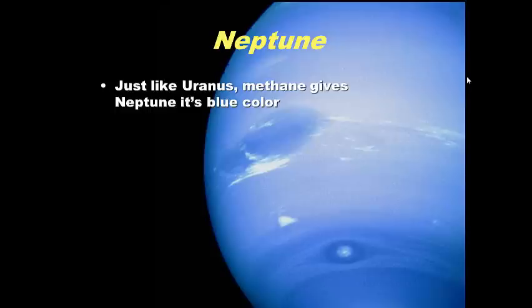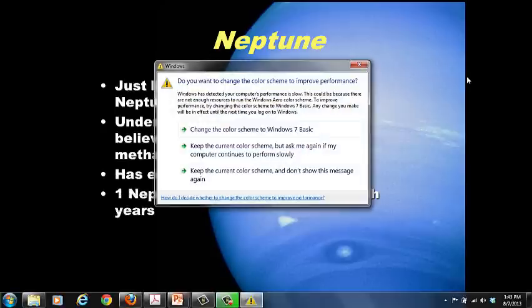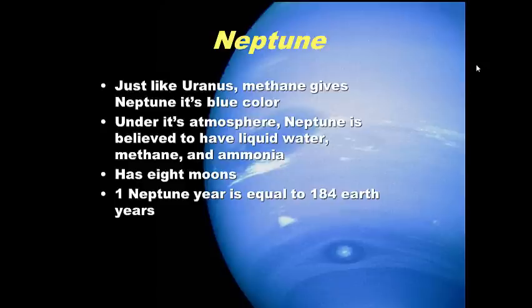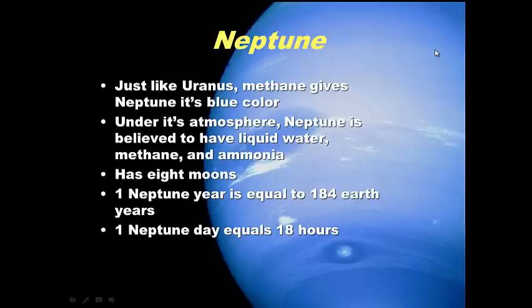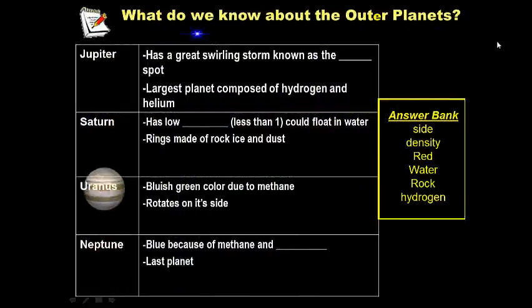Neptune is the last planet in our solar system and looks a little bit like Uranus. Just like Uranus, methane gives Neptune its blue color. Under its atmosphere, Neptune is believed to possibly have liquid water, which contributes to its bluish color, along with methane and ammonia. It has eight moons or satellites. One Neptune year equals 184 Earth years — so it takes 184 Earth years for Neptune to go all the way around the Sun. A Neptune day is about 18 hours.